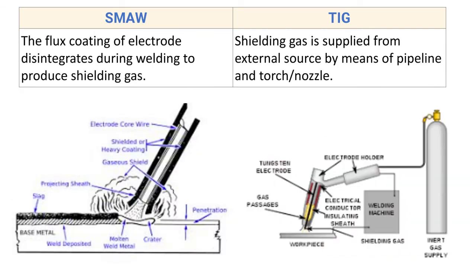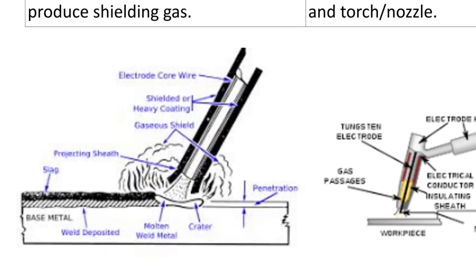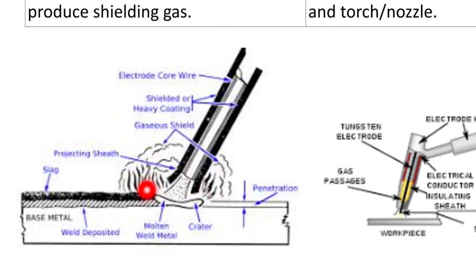Next difference: in SMAW, the flux coating of the electrode disintegrates during welding to produce shielding gas. Here you can see the schematic of the SMAW process, where the electrode is coated with flux. The flux disintegrates during deposition, displaces oxygen in the weld zone, and protects the weld bead from oxidation and other contamination.